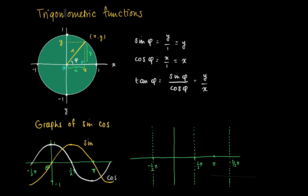For the tangent of phi, when the cosine of phi equals 0, the tangent of phi is not defined. So we have vertical asymptotes at minus one-half pi, one-half pi, and three-halves pi — in general at one-half pi plus k times pi. This is a typical graph of the tangent function.